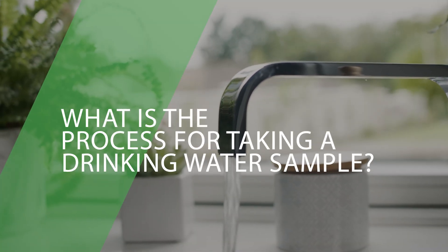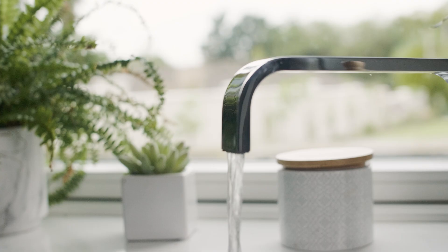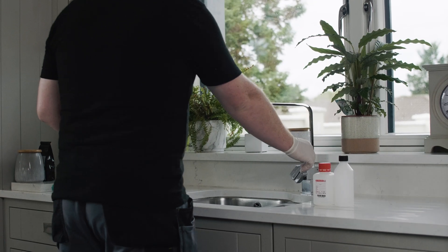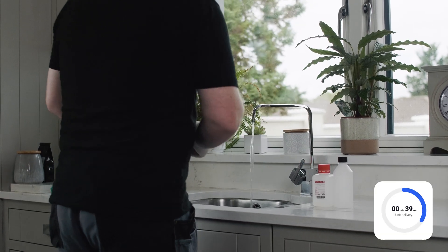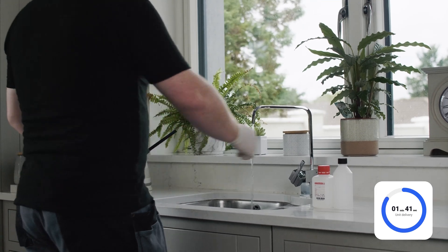What is the process for taking a drinking water sample? Step 1. Turn on the tap at an even rate for a minimum of 2 minutes to clear standing water from pipes.